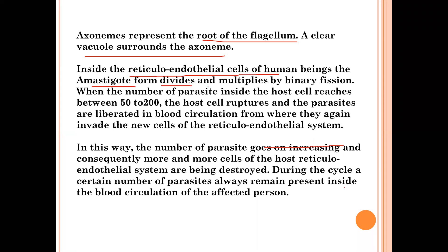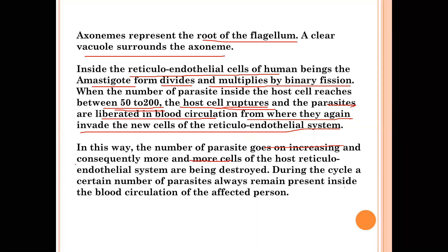Inside the reticulo-endothelial cells of the human host, the amastigote form divides and multiplies by binary fission. When the number of parasites inside the host cell reaches between 50 to 200, the host cell ruptures. The parasites are liberated into the blood circulation and then invade new reticulo-endothelial cells. In this way the number of parasites keeps increasing, and more and more cells of the reticulo-endothelial system are destroyed.